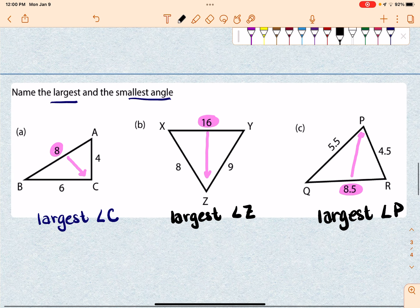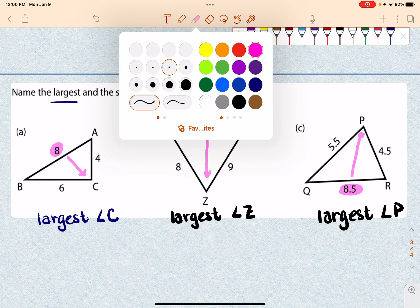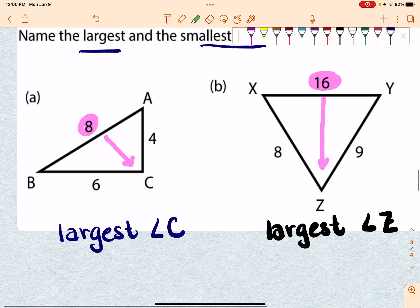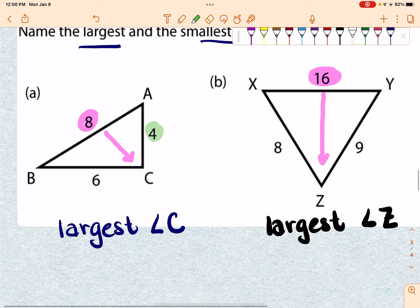Okay, so finding the largest side, it's the angle that's opposite or across from it. Now let's take a look at the smallest. So if I go back to A, the smallest side is going to be 4. The angle across from that is B. So the smallest angle in this one is angle B.